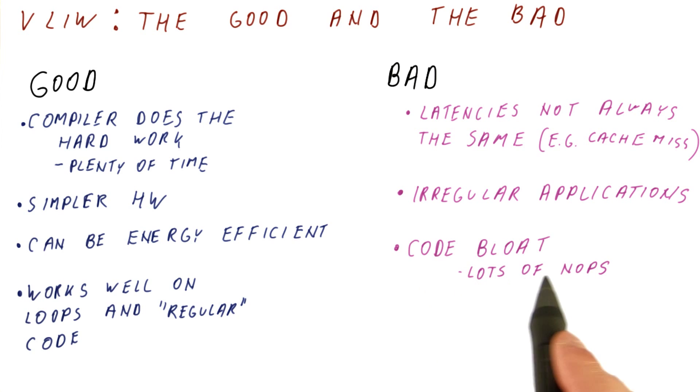And finally, there is the code bloat issue. We have already seen in our quiz that the code for a VLIW can be much larger than the code for a normal out-of-order processor, because we are inserting a lot of no-ops to prevent things that are dependent on each other from being in the same large instruction.